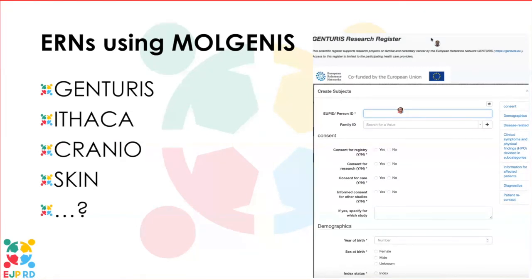Currently four ERNs are using Molgenis as their central electronic data capture system: Genturis, Ithaca, Cranio, and Skin. The fact that four ERNs are using it allows the Molgenis team to help think along with cross-ERN harmonization of data.